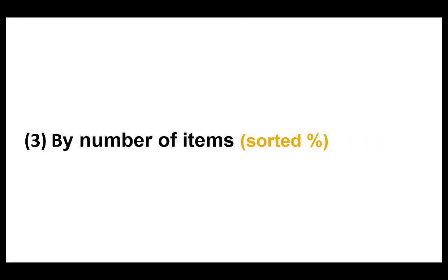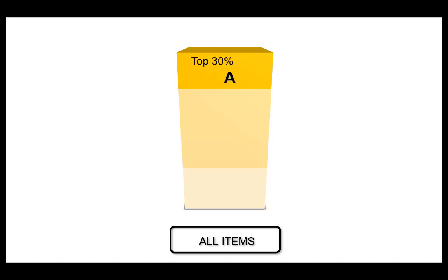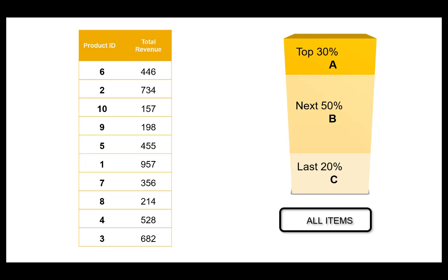The third method is useful if you want the segments to be calculated based on the relative number of items that produce various shares of the overall revenue. For example, you can define that segment A should contain the top 30% of all products in terms of the revenue they bring in. There are 10 products in total, so 30% equals 3 items. Segment B should contain the next 50% of all revenue-grossing products, which equals 5 items, and segment C should contain the remaining 2 items. If you now run segmentation, the system sorts the products into descending order based on the revenue produced by each and assigns the top 3 products to segment A, the next 5 to segment B, and the rest to segment C. It doesn't matter how much overall revenue was produced by these groups — only the ranked contribution of individual products is considered.